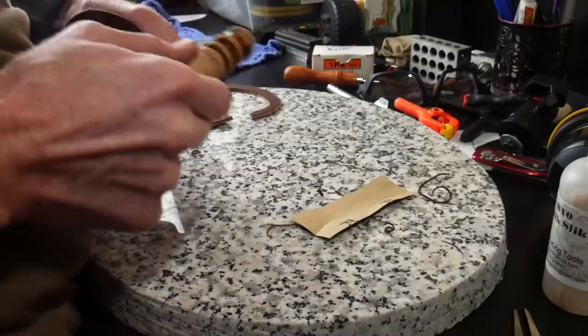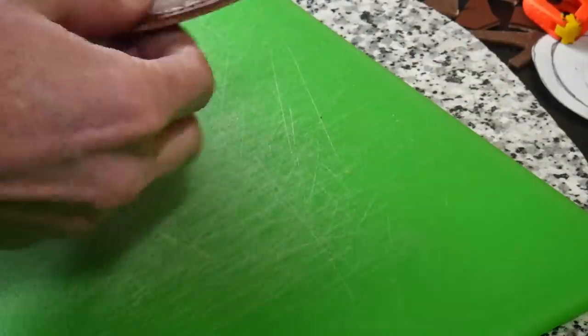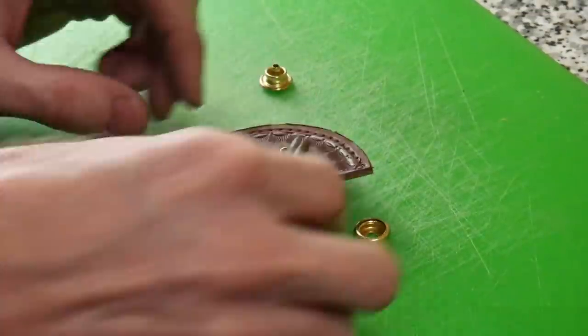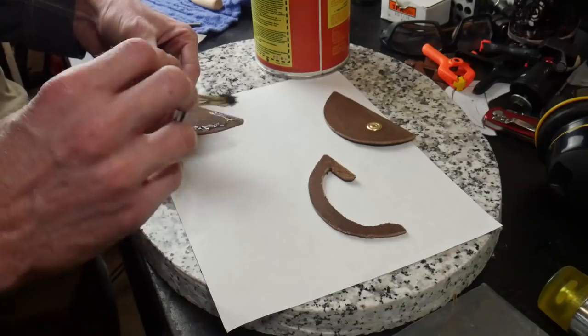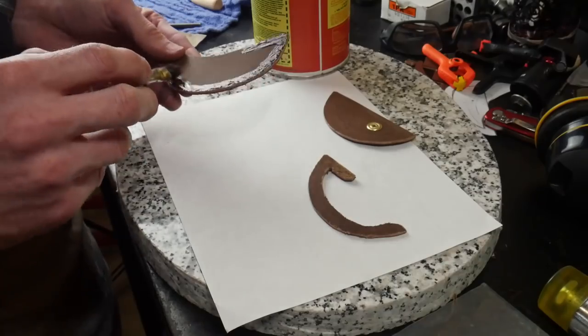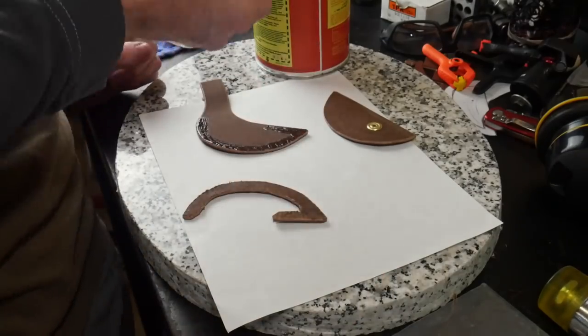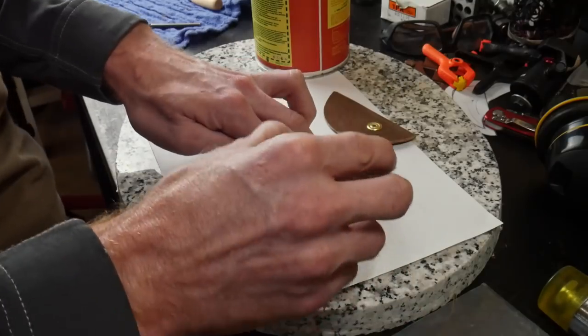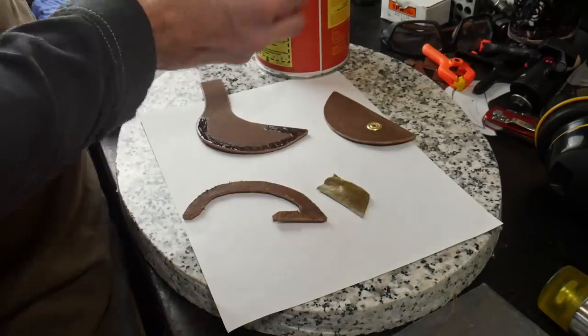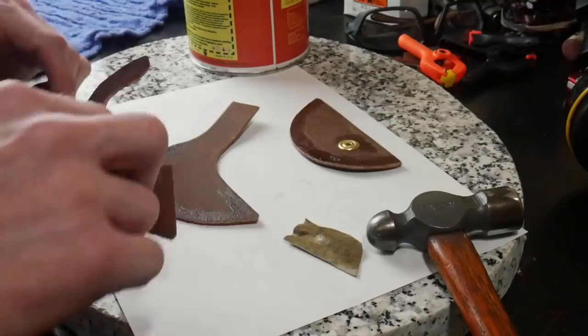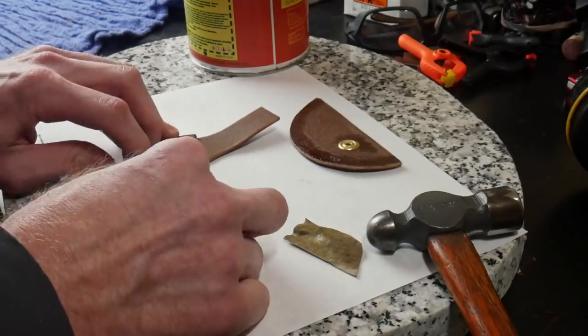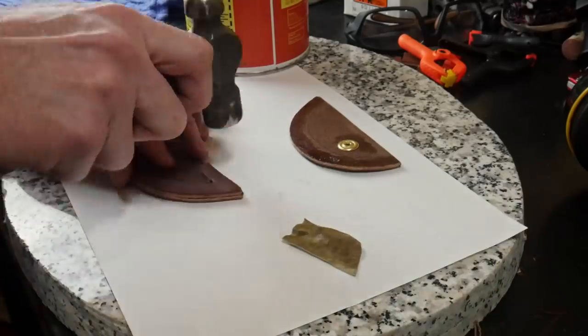Before gluing the sheath together, we have to put in the receiving end for this snap. To glue it together we'll be using Barge contact cement, which is the gold standard in leather working. We get the Barge along where our welt will land in the back piece, we put it on the welt itself, and then on the front piece.